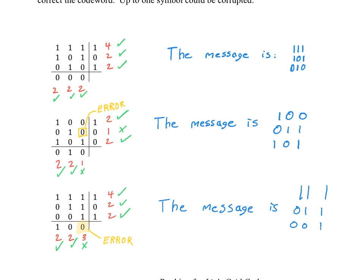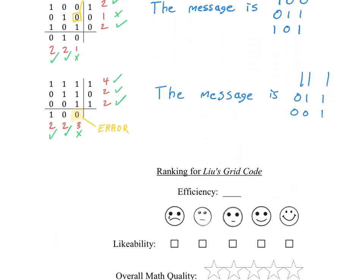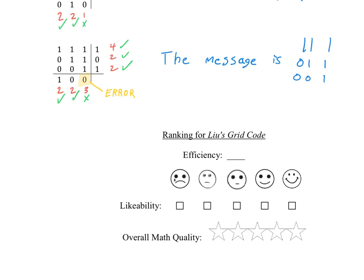Let's give Lue's grid code a ranking as well. What efficiency did we hit this time out of 15? The message was nine digits in length. So the efficiency is 9 out of 15. I'll give this the happy face again — quite happy about that improvement. In terms of stars, I'm going to give three stars for the creative use of a rectangle to get error correction.